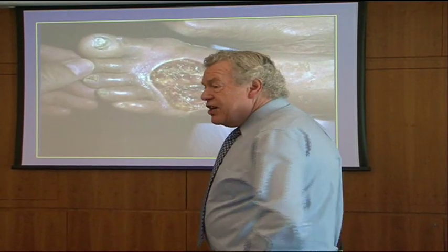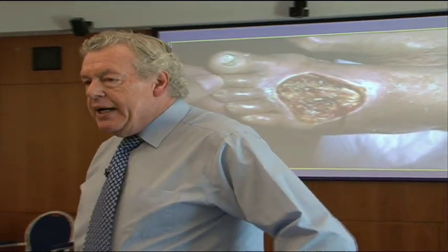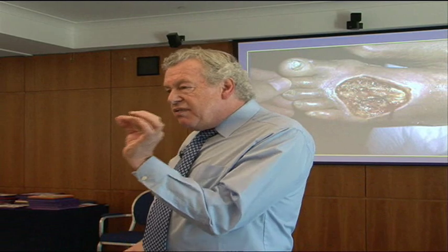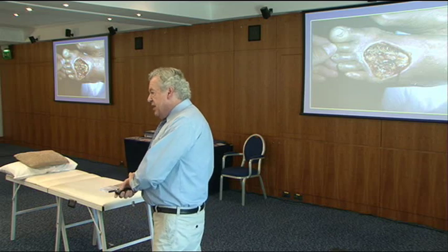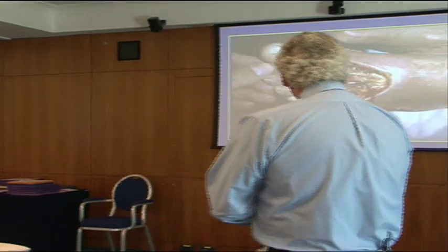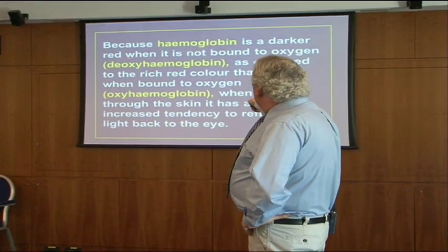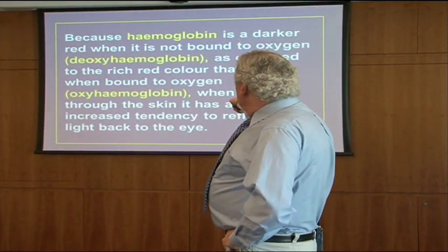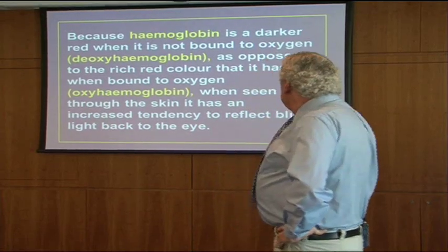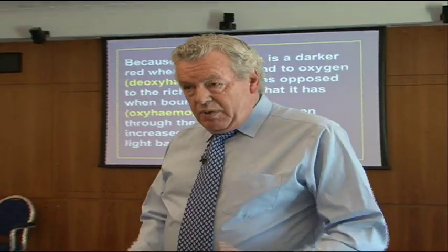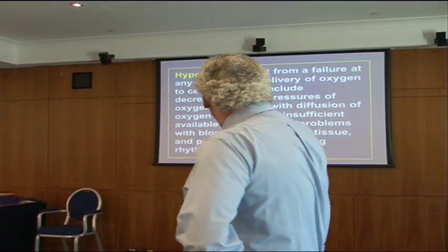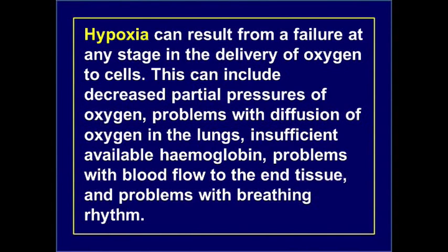We get a lot of people with varicose ulcers — they've usually got very thin skin and it just doesn't repair. Because hemoglobin is a darker red when not bound to oxygen — known as deoxyhemoglobin — as opposed to the rich red colour when bound to oxygen, called oxyhemoglobin. When seen through the skin, it has an increased tendency to reflect blue light back to the eye, so when it's lacking oxygen it appears blue. Hypoxia can result from a failure at any stage in the delivery of oxygen to the cells.